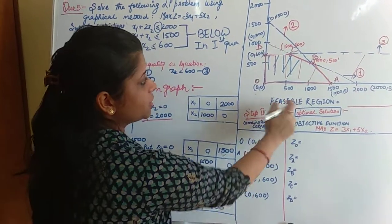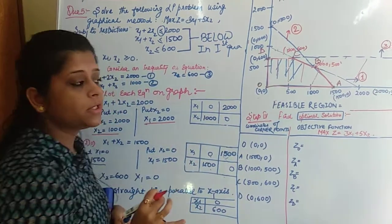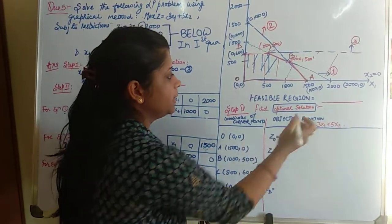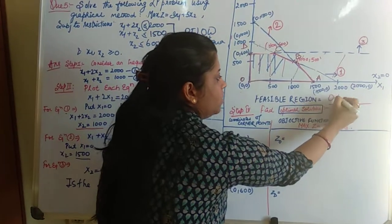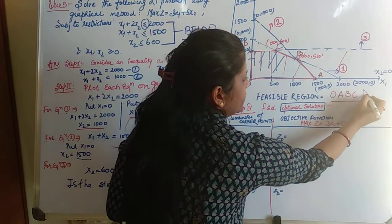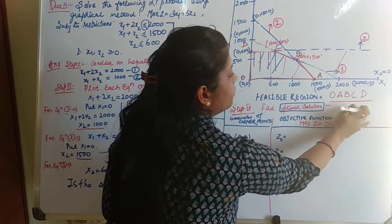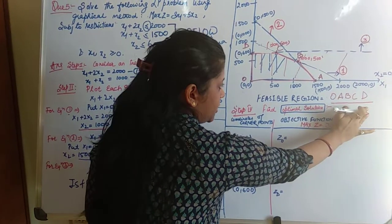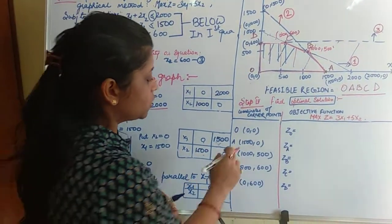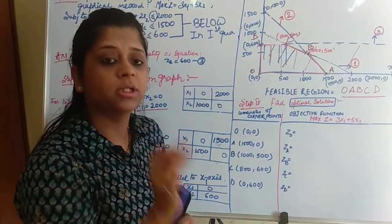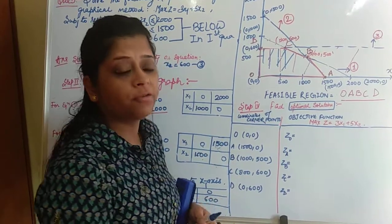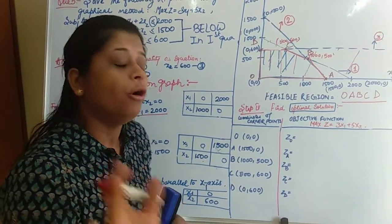The feasible region is O, A, B, C, D. Now, the corner points — Step 4 — is the last step in which you have to find the optimal solution.